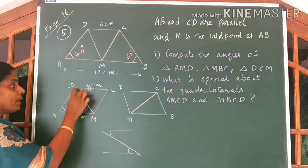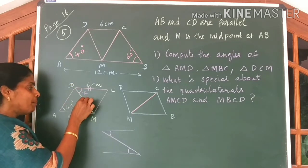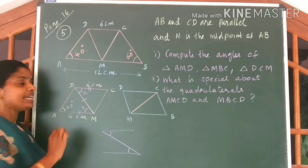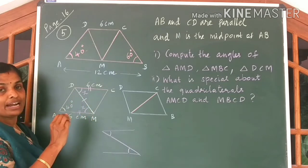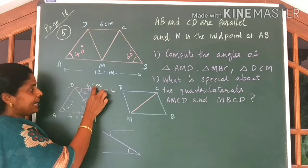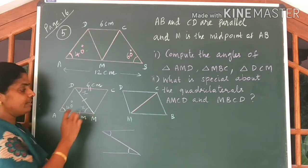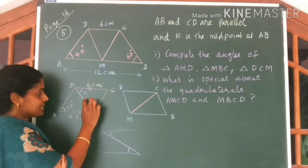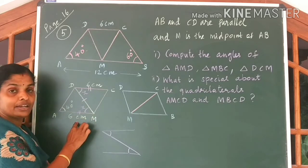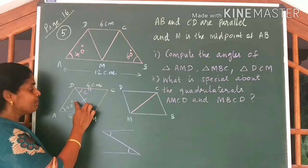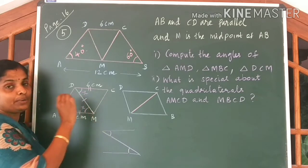What about DM? DM is the common side for both these triangles. So using our idea — side, included angle, side for the first triangle, and side, included angle, side for the second triangle — you can very well understand these two triangles are equal triangles.